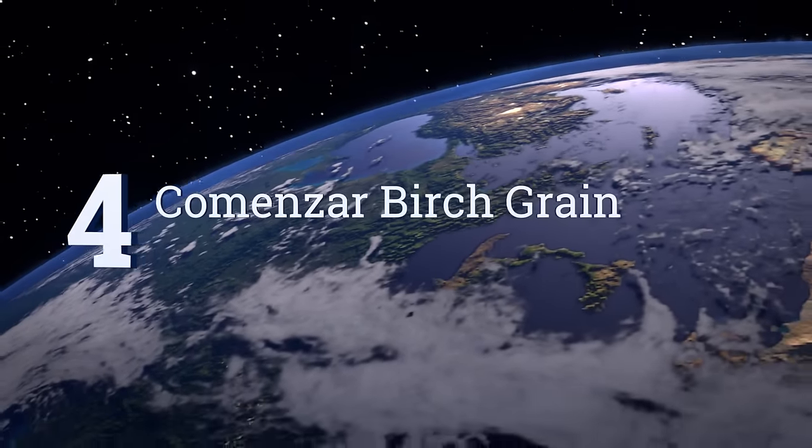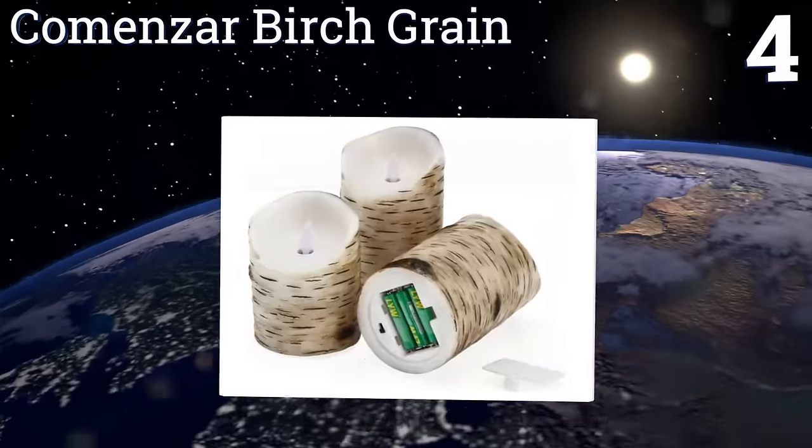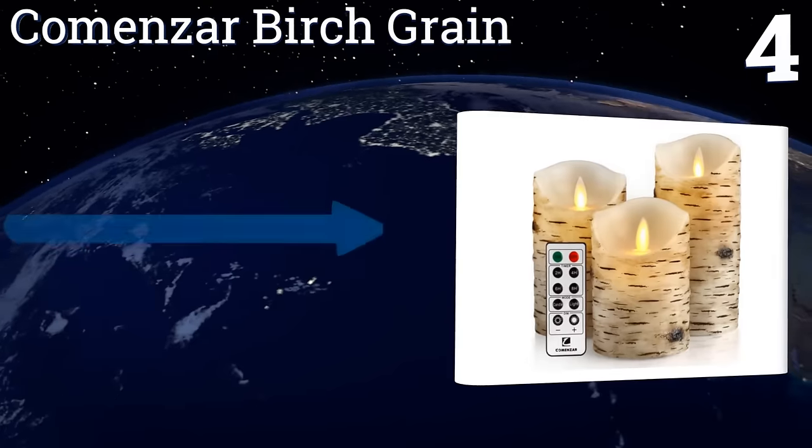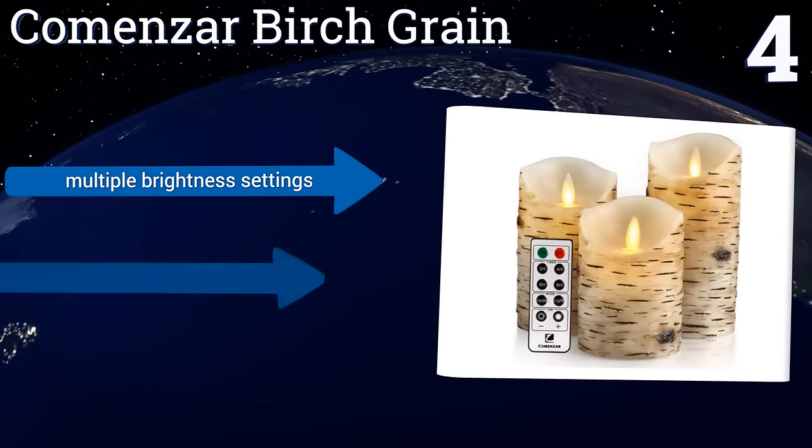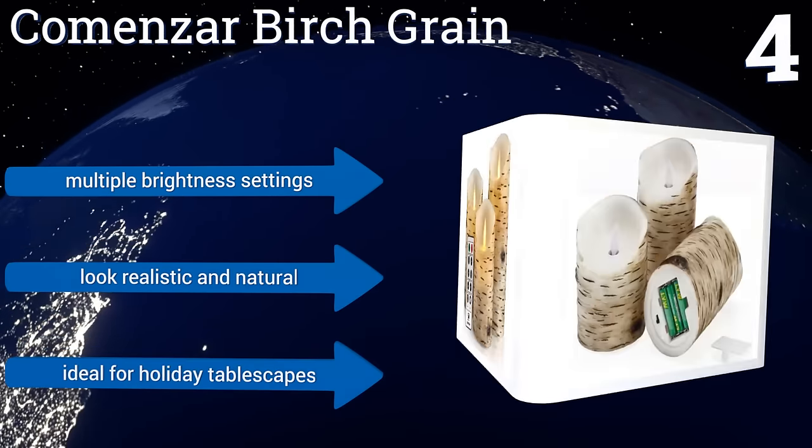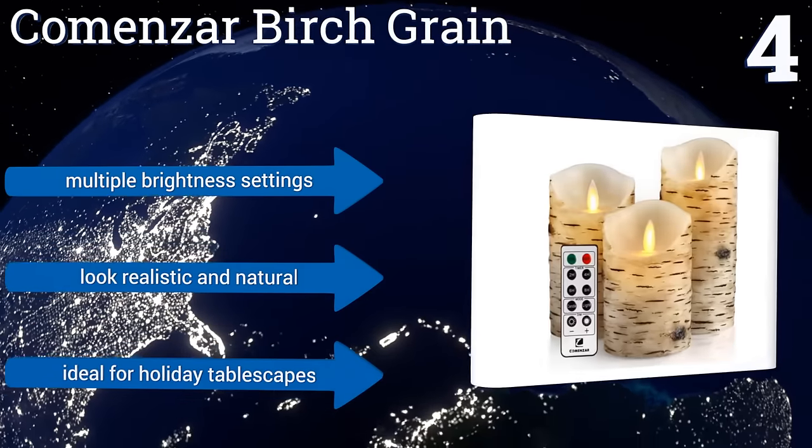At number 4, a 10-key remote helps you keep this set of three Comenzar Birch Grain Pillars programmed how you want them. Two modes allow for steady or flickering light and four timer settings ensure you'll have just the ambience you want for as long as you want it. They offer multiple brightness settings and look realistic and natural. They're ideal for holiday tablescapes.